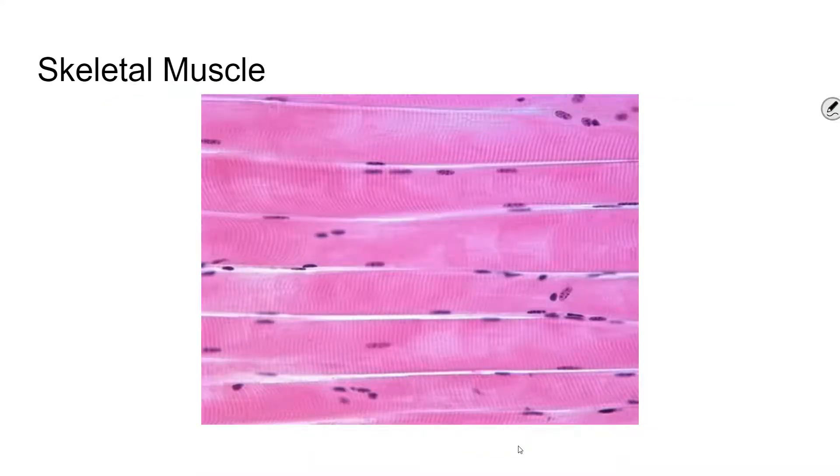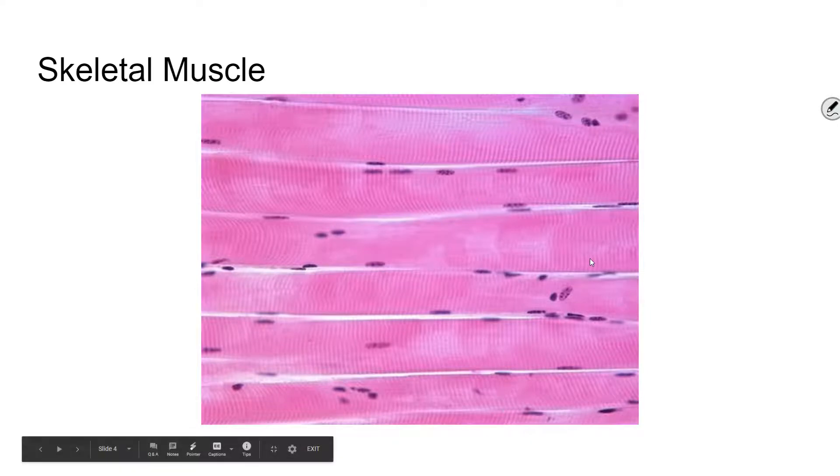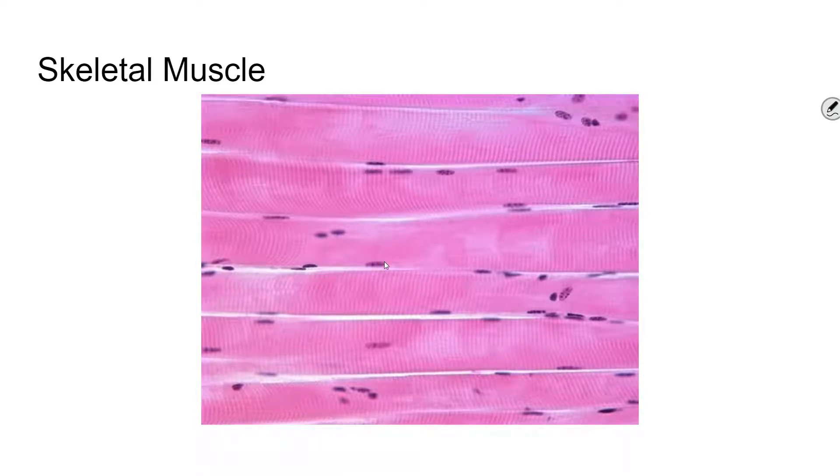Skeletal muscle, these are the longest of all muscle tissues, and they have these things that are called striations. You can see these striations in here, and striations is just a fancy word for stripes. You'll also see skeletal muscle called voluntary muscle, because skeletal muscles are muscles that you consciously choose to contract, whereas other muscles you don't do that.